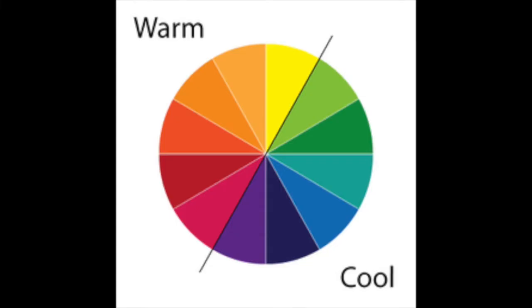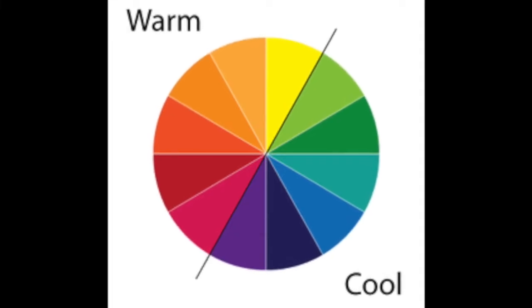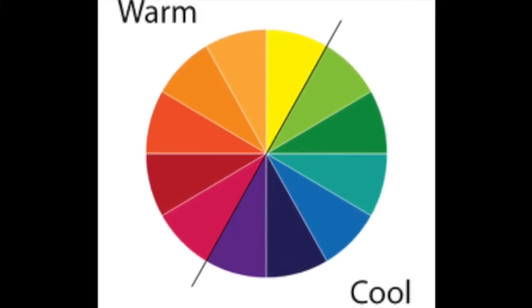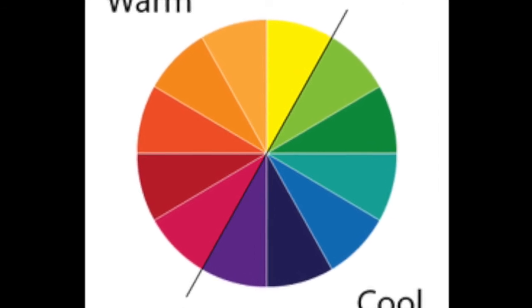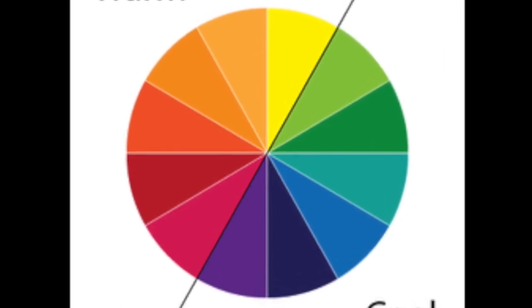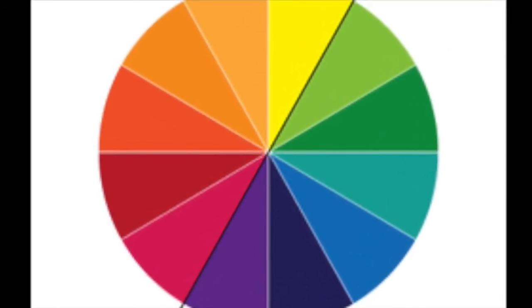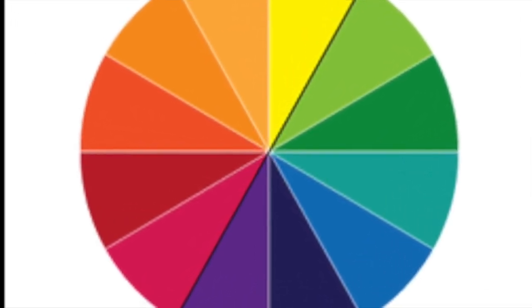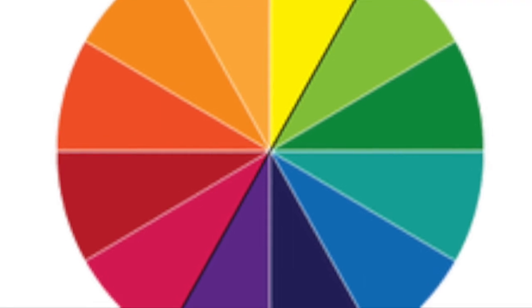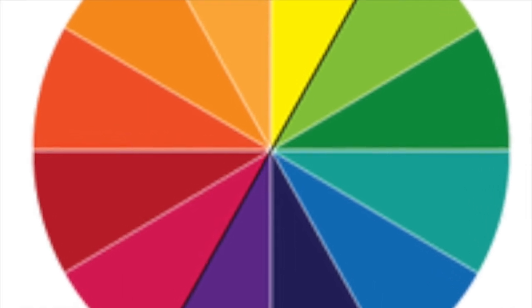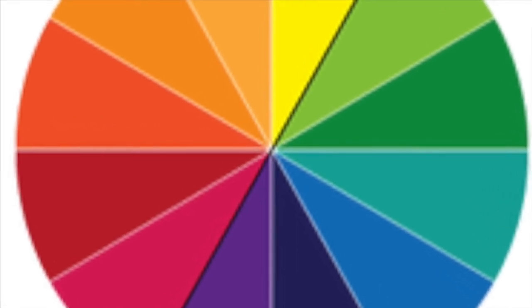We give colors temperatures based on how we feel when we look at them. We think of warm colors as red, orange, and yellow, and cool colors as blue, green, and purple.